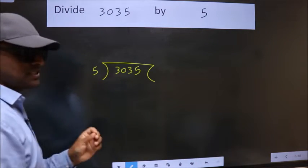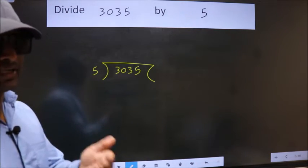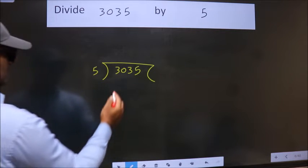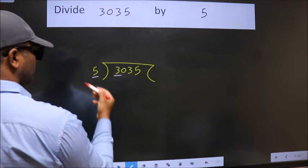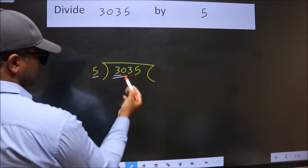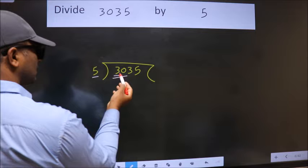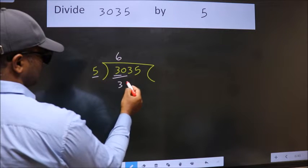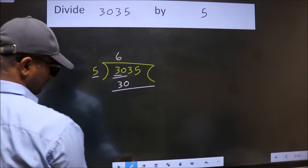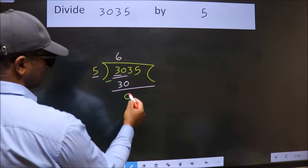This is your step 1. Next, here we have 3. Here 5. 3 is smaller than 5. So we should take two numbers, 30. When do we get 30 in 5 table? 5, 6, 30. Now we should subtract. We get 0.